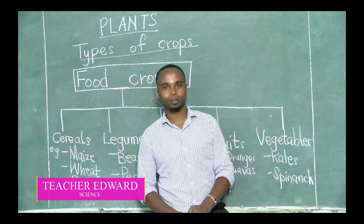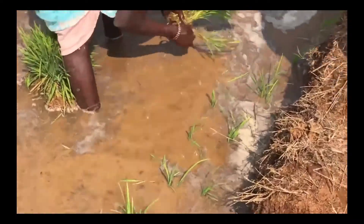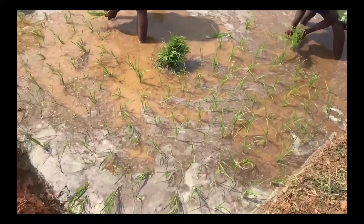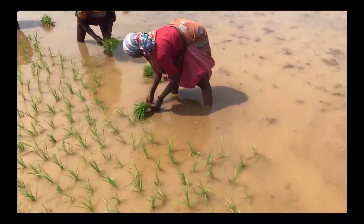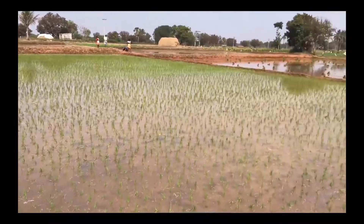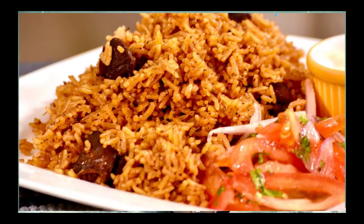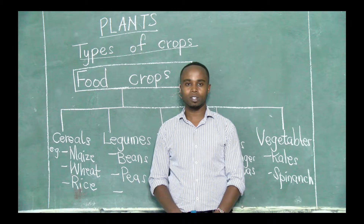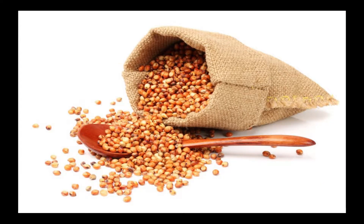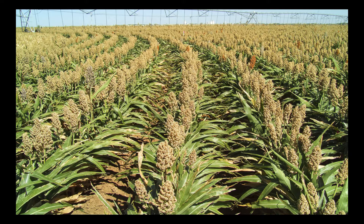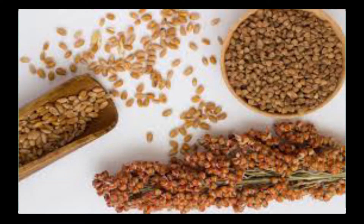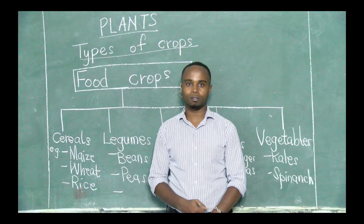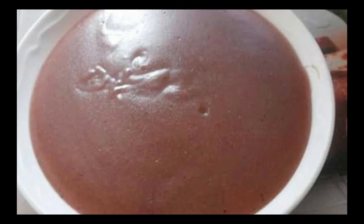Then we have rice. Rice is another cereal. Rice is grown in areas that are flooded — it needs a lot of water. That is a rice plantation, and that is how rice looks like. Another example of cereal is sorghum. That is sorghum — that is a sorghum plantation. Sorghum can mostly be used to make flour that cooks porridge.